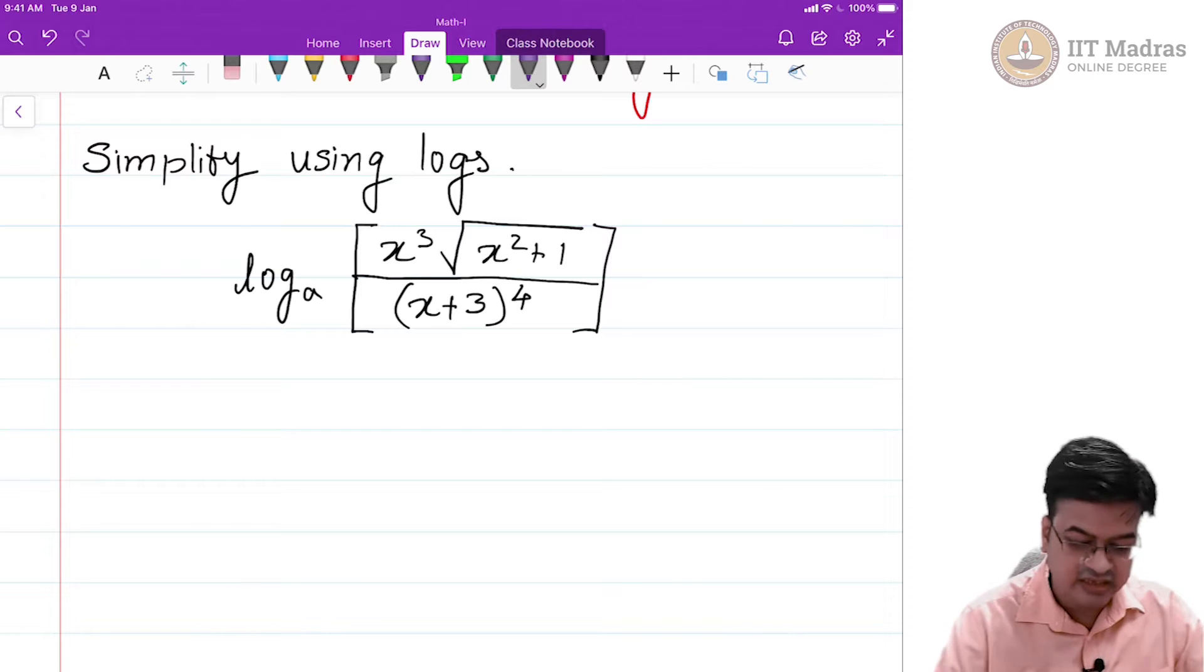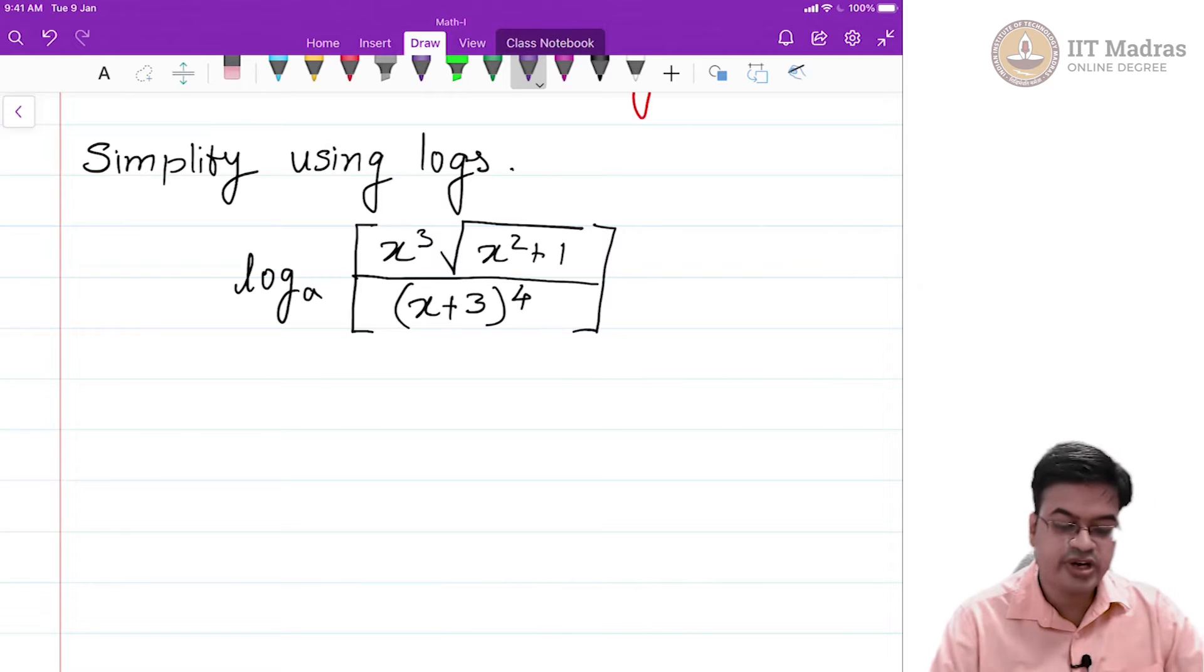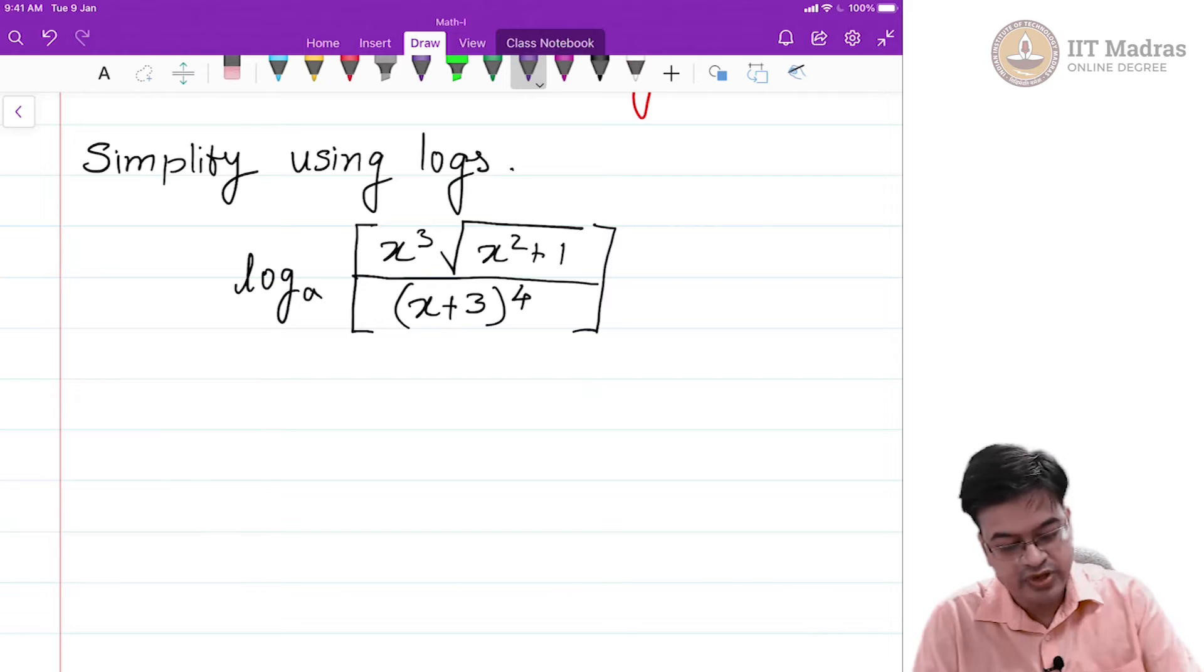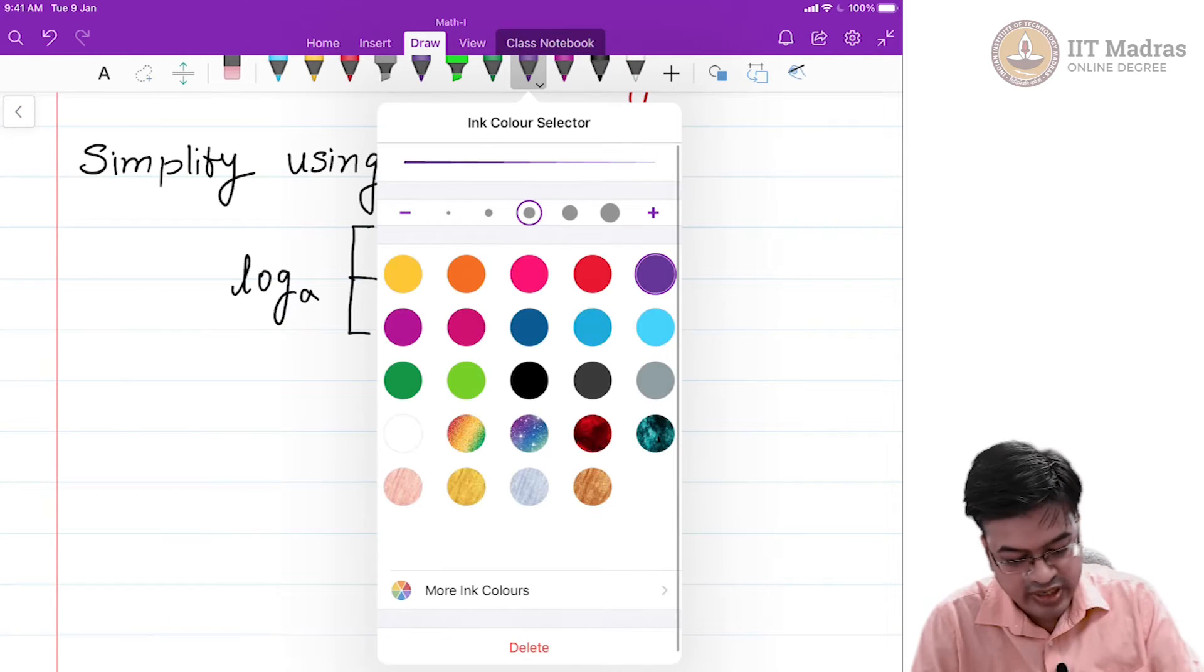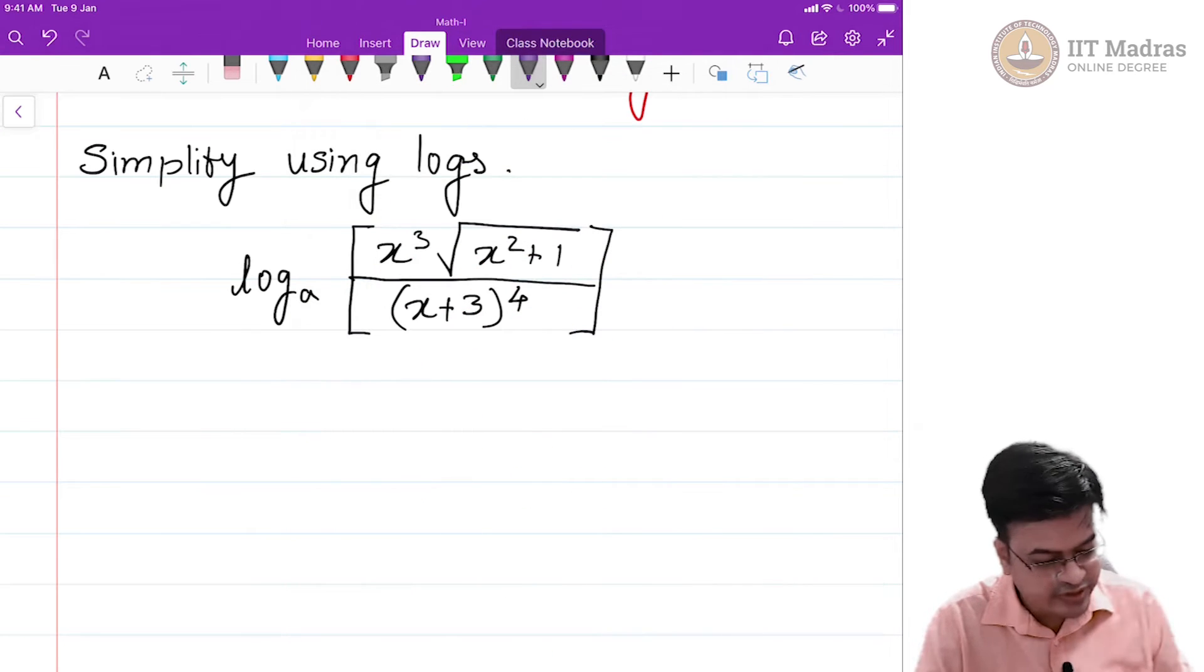It looks an ugly sum or ugly product and we have taken log and how the process is simplified when you use the properties of logarithm that you have studied just now or the laws of logarithm that you have studied just now. So, let us go ahead and do that.